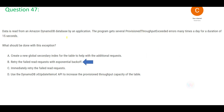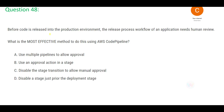Before code is released into production, the release process workflow needs human review. Think of the scenario: you are a developer, code goes through testing environments — unit testing, system integration testing, performance testing. Unit testing is done by the developer, but other testing is done by QA teams. There has to be a review before code finally hits production, otherwise you might mess up the production environment.